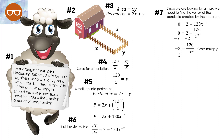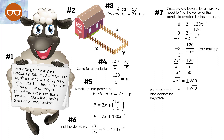Remember, anytime we have an integer we can write it over one. So now we have negative 2 over 1 equals 120 over negative x squared. Cross multiplying: negative 2 times negative x squared is positive 2x squared, and 1 times 120 is 120. Both are even so we divide by 2 on both sides. Since x squared equals 60, we take the square root of both sides. The square root of x squared is x, and the square root of 60 is plus or minus the square root of 60. Since we're talking about distance, x cannot be negative, so x equals the square root of 60, approximately 7.75 yards.